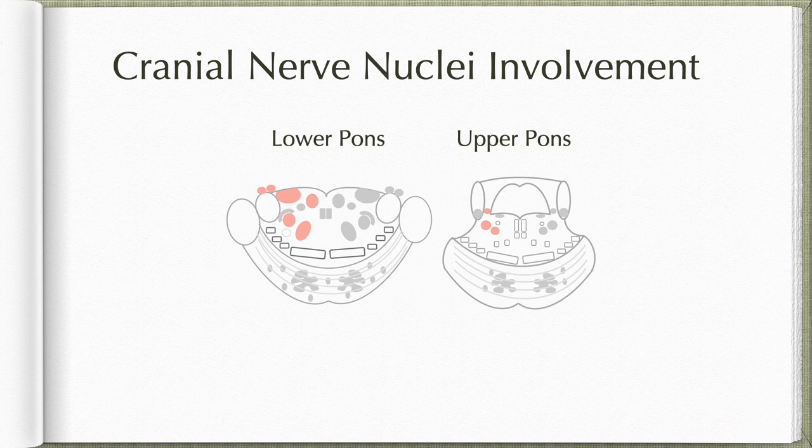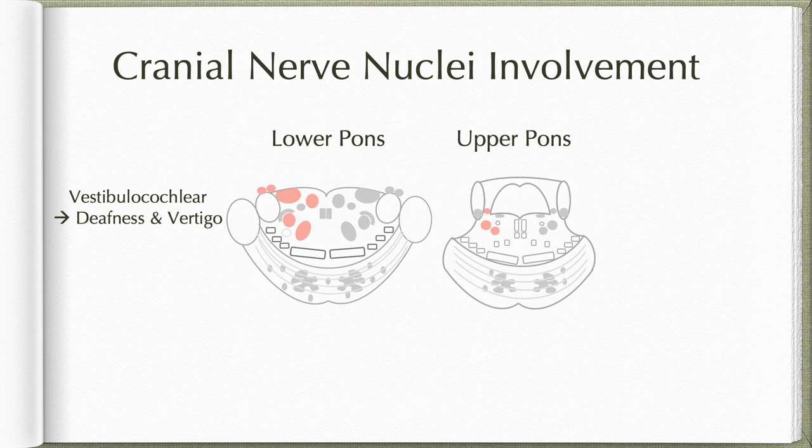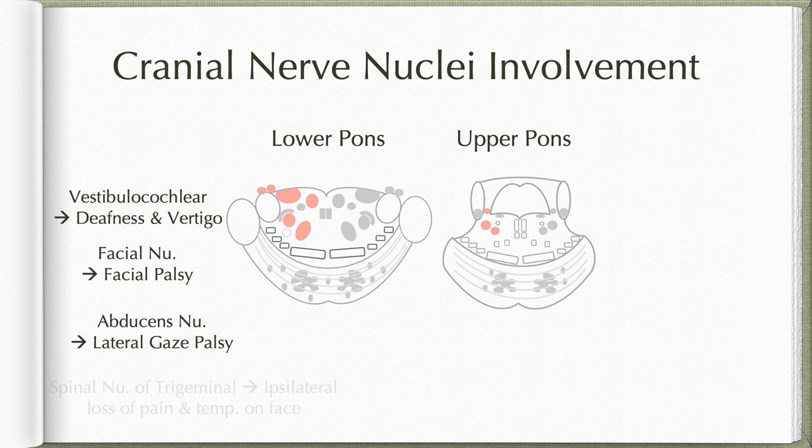Regarding cranial nerve nuclei involvement in pontine lesions: if the lesion is at the lower level of the pons, the vestibulocochlear nuclei will be involved resulting in deafness and vertigo; facial nerve nucleus involvement results in ipsilateral facial palsy; abducens nucleus involvement results in lateral gaze palsy; and spinal nucleus of trigeminal nerve involvement results in ipsilateral loss of pain and temperature on the face.